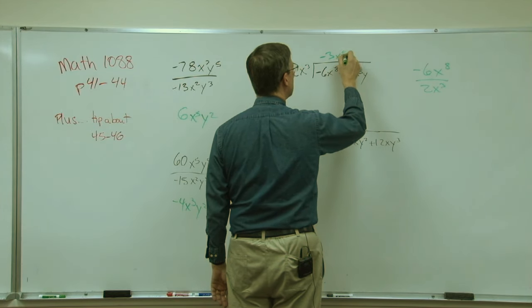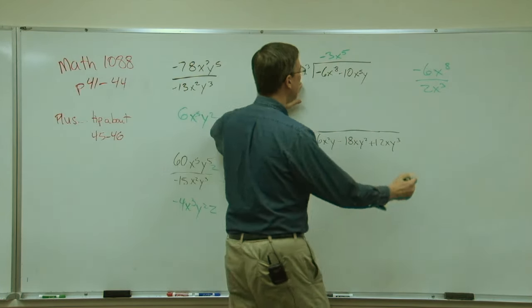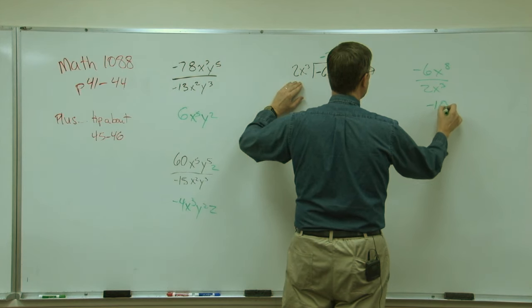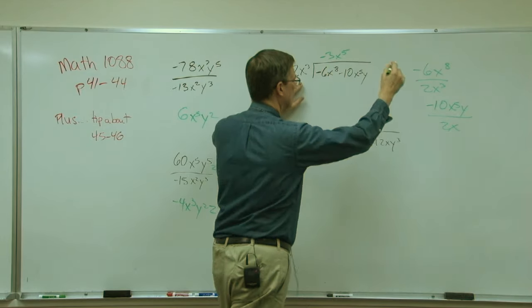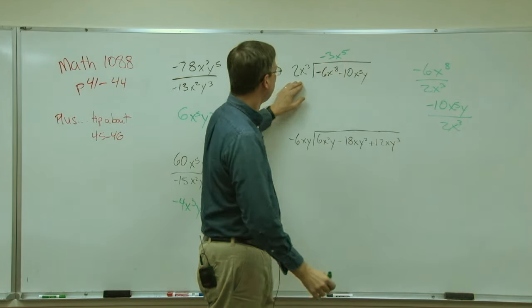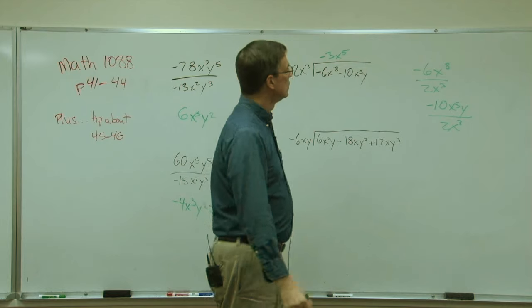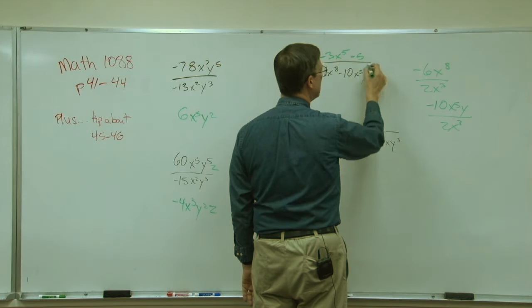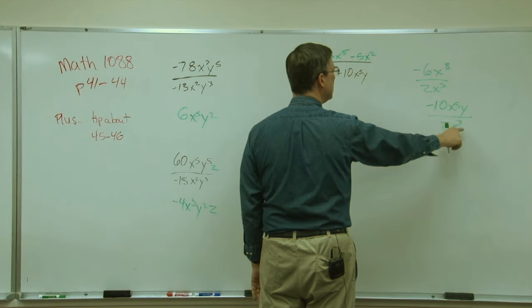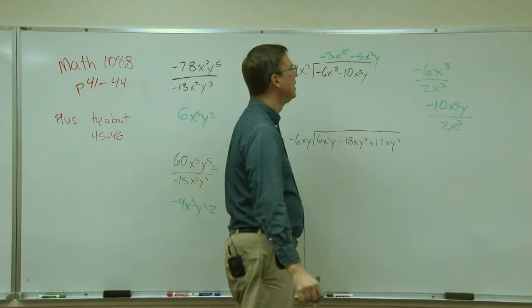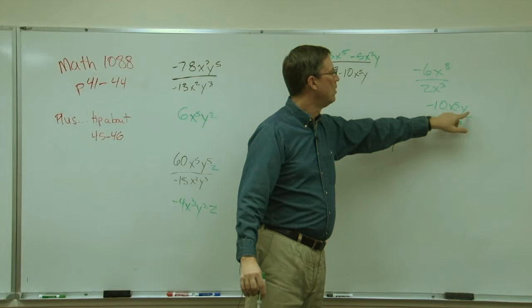Now we'll do the same thing with this. I'm going to go ahead and write this one: negative 10x to the fifth y divided by 2x to the third. Again, we divide, negative 10 divided by 2, so we know that that's negative 5. Subtract the exponents, so x squared. Here's one of those cases where we're just going to tack on the y because there's nothing here to cancel against it. We just keep the same y to the one power as part of the answer.